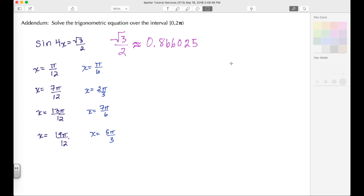What we were trying to do is solve a trigonometric equation over the interval 0 to 2π, where 0 is included and 2π is excluded. The trig equation we were looking at was sin(4x) equals √3/2, and we found these 8 solutions in this interval.